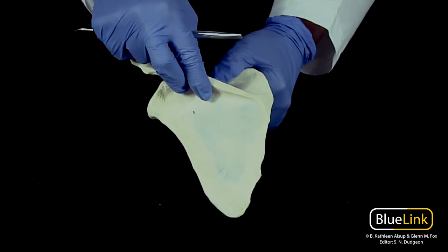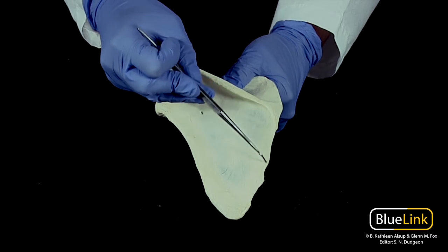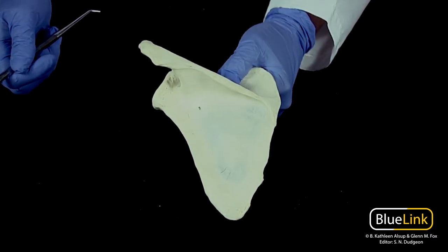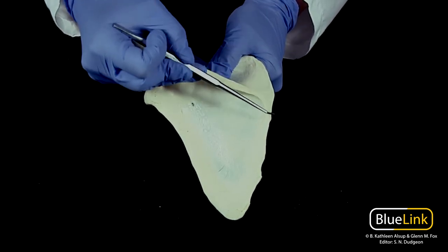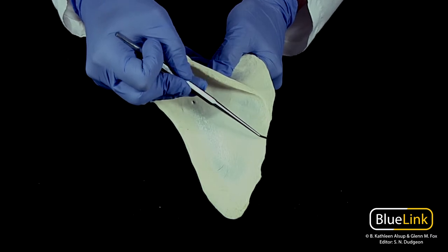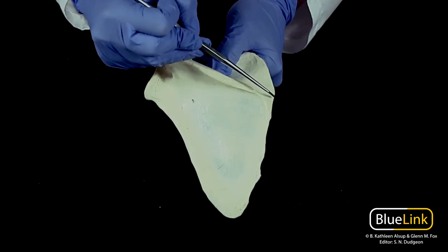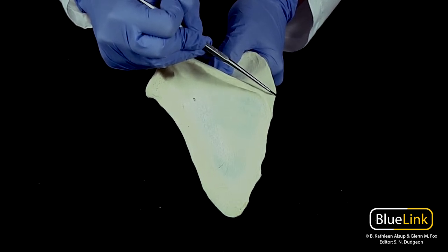Looking at a posterior view and still discussing the borders, the medial border is going to be an insertion site for your rhomboid muscles that we talked about earlier in the semester. Rhomboid major is going to be inferior to your scapular spine, and rhomboid minor is going to attach at the root of the spine.